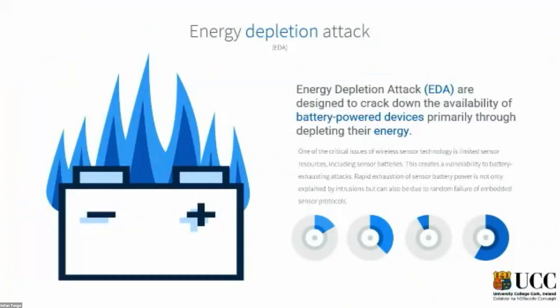When we talk about energy depletion attacks — because NB-IoT is focused on IoT devices that are wireless and battery-powered — that becomes one of the biggest vulnerabilities for it. Energy depletion attacks can happen based on natural external factors like temperature differences, and they can happen passively or actively when someone tries to deplete the battery as fast as possible.